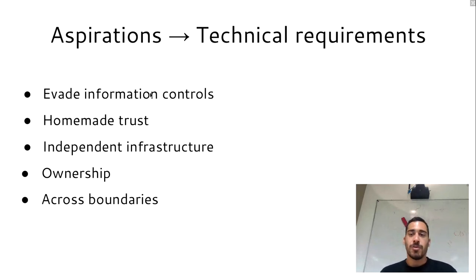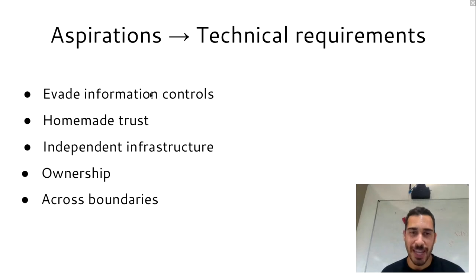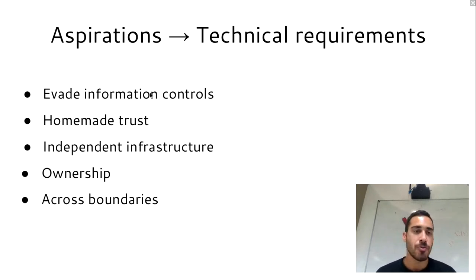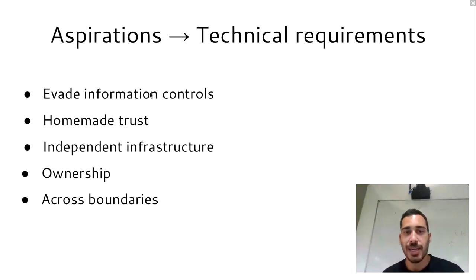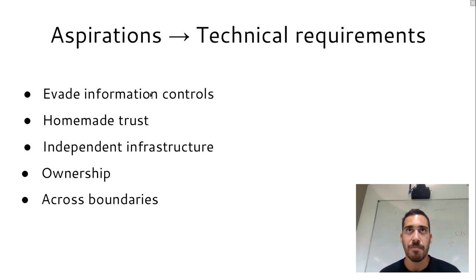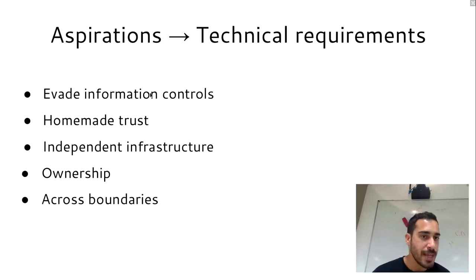Moving from the aspirations to the technical requirements, Biton aims to help people evade information controls. By information controls, we mean any control structure, any censorship and surveillance of our communications, any type of someone taking advantage of other people in our network communications.